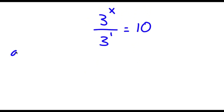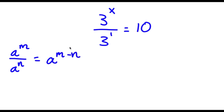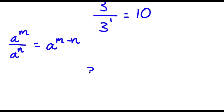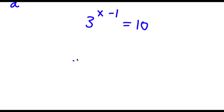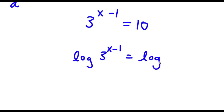Now if I have something in the form a to the power of m over a to the power of n, this is going to equal a to the power of m minus n. So in this case, 3 to the power of x over 3 to the power of 1 gives us 3 to the power of x minus 1 is equal to 10. So now to solve this, I'm going to take the log on both sides. So now I have log of 3 to the power of x minus 1 is equal to log 10.